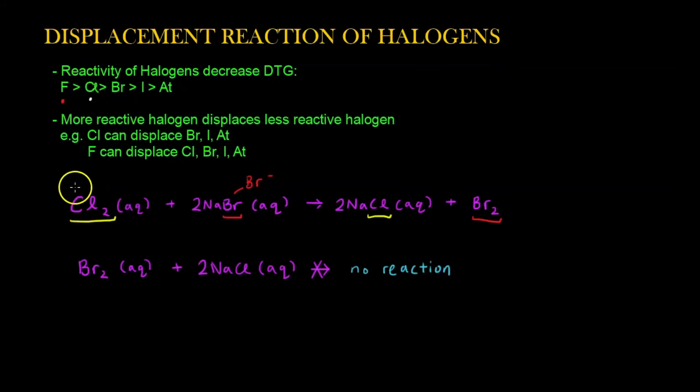This is what we mean by displacement reactions in halogens. The more reactive can kick out the less reactive, and the more reactive has to be in the form of a diatomic molecule. The less reactive to be kicked out has to be in terms of an ion that is ready to leave the cation and gets replaced by the incoming molecule which will in turn become an ion. That is all for Group 7 halogens.